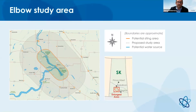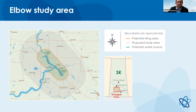The Elbow study area: the solid orange line is what we're calling the potential siting area — a 10-kilometer radius around the water body, which in this case is Lake Diefenbaker from Gardiner Dam down to the Coteau Dam. The area outside of that, shown with a dotted line and lighter gray shading, is a 30-kilometer radius outside of the siting area, which we're calling the proposed study area. Federal regulations when siting a project like this require that you study an area much larger than the site itself. We're going to start with a 30-kilometer radius, and that might change as we engage and learn more about these regions.